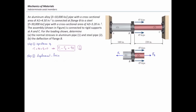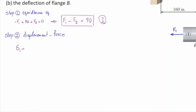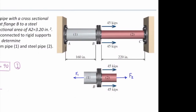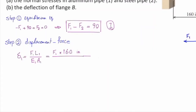In step two, I try to determine the internal deflections in the system. The deflection in element number one is calculated using delta equals FL over EA. Plugging in the values: F1 is unknown, the length of element one is 160 inches, modulus of elasticity is 10,000 KSI, and area is 4.5 square inches. Simplifying gives delta one equals F1 divided by 281.25.